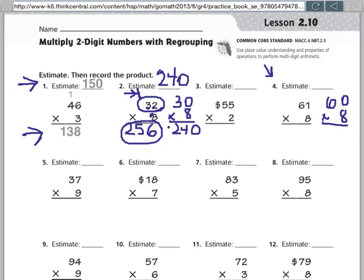So then I take my basic fact of 6 times 8, which is 48, and make sure I add my 0 back on. So my estimate is going to be 480.